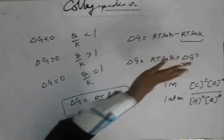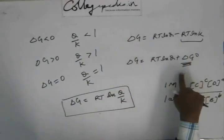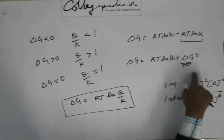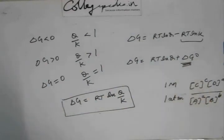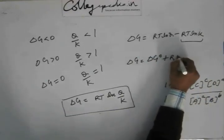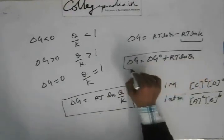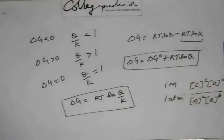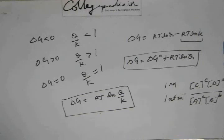Therefore, ΔG° equals minus RT ln K. We can replace minus RT ln K with ΔG°, so the final expression becomes ΔG equals ΔG° plus RT ln Q. This is the expression we must know. It will be utilized to solve more numericals, and it will be revisited in the chapter on chemical equilibrium for a more detailed discussion.